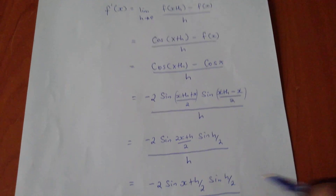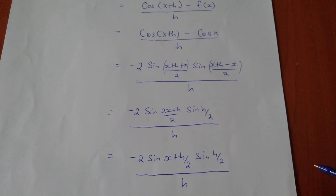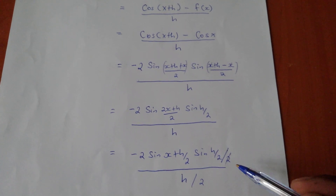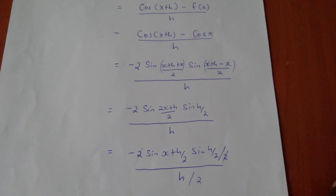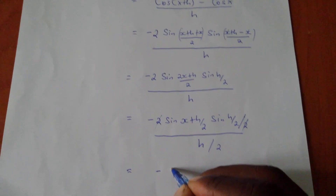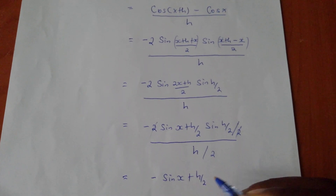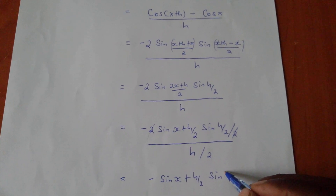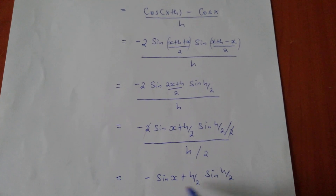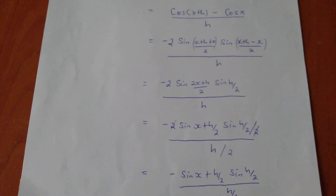To eliminate the factor of 2, I divide both the numerator and denominator by 2. The twos cancel, leaving: negative sine of (x plus h/2) times sine(h/2) over (h/2).